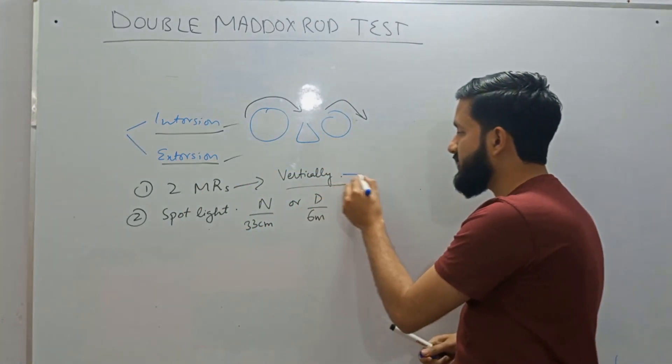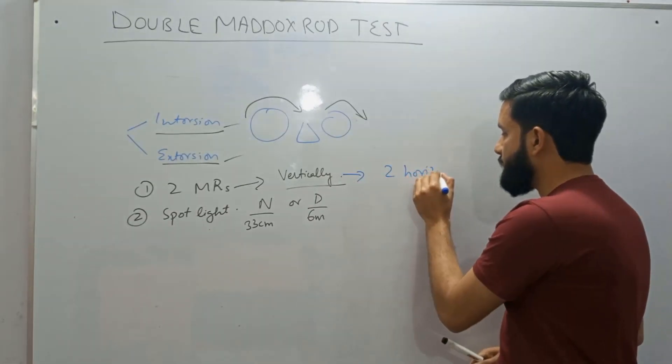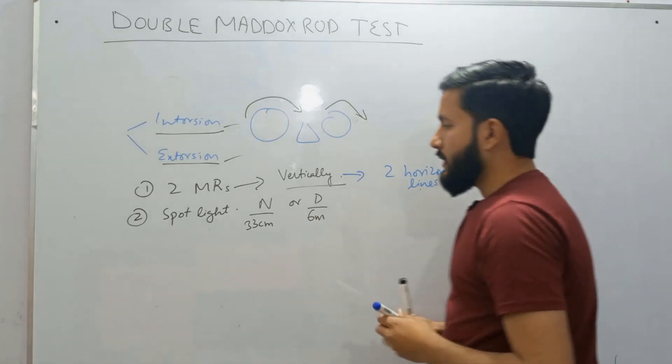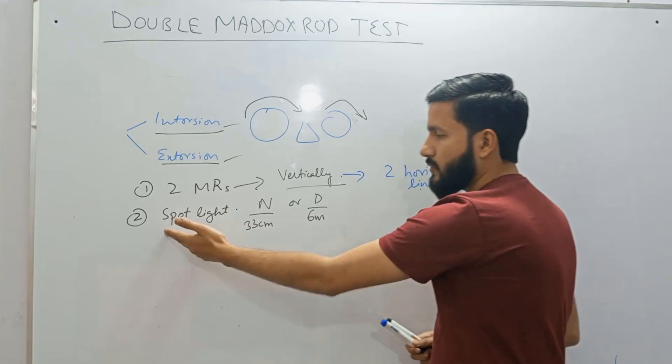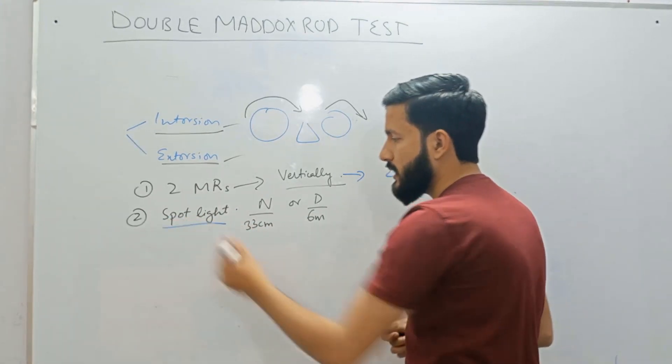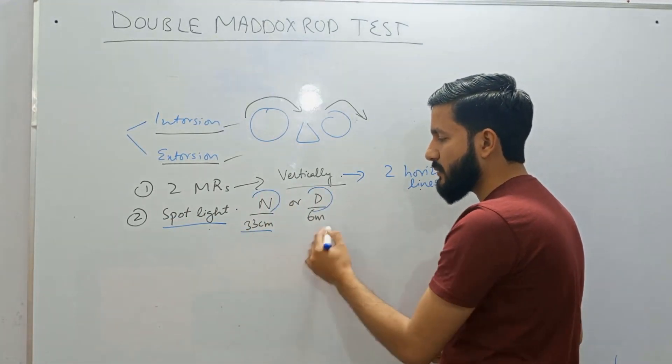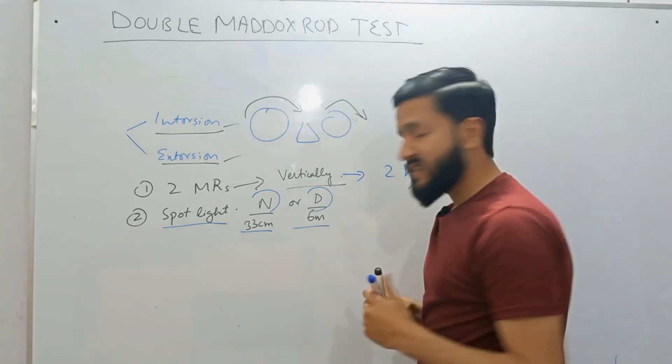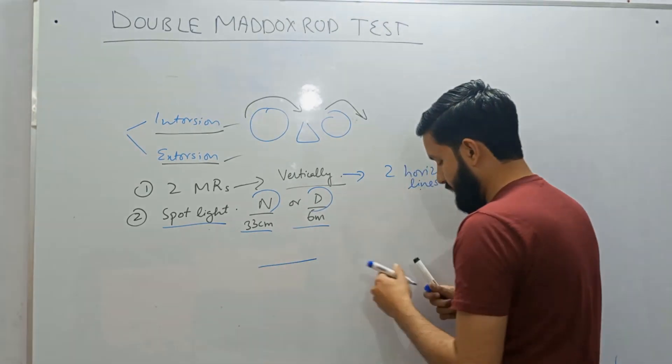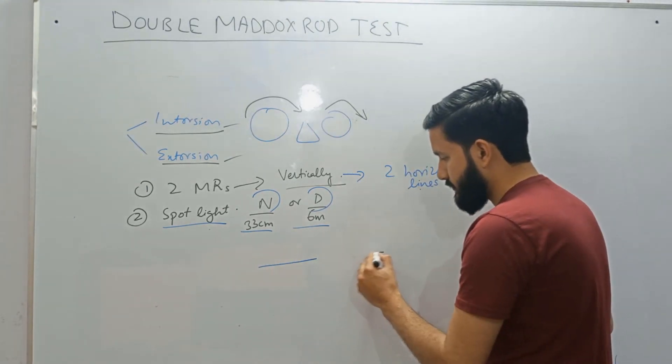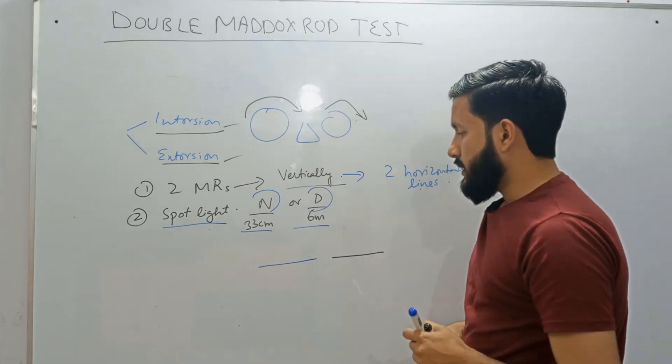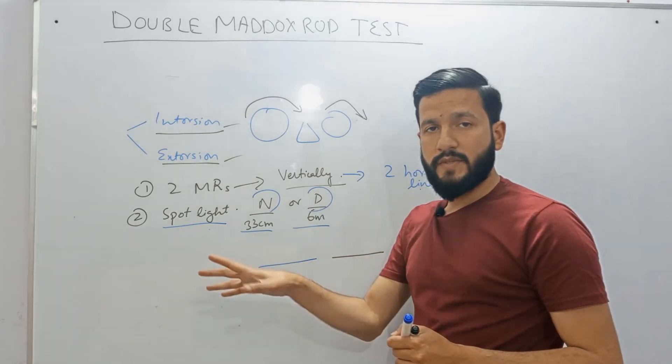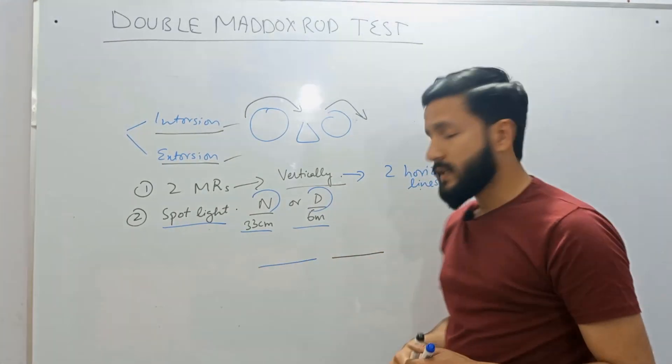So the observer will see two horizontal lines and you will be asked to fixate at the spotlight depending upon the distance at which we are doing 33 centimeter or 6 meters. And the observer is supposed to see two horizontal lines. And the lights of the room should be dimmed. This is another protocol of doing this test.